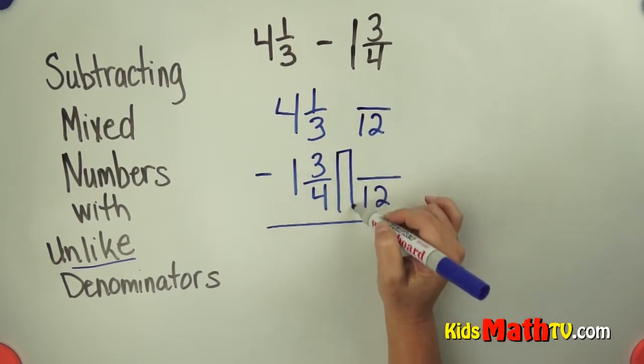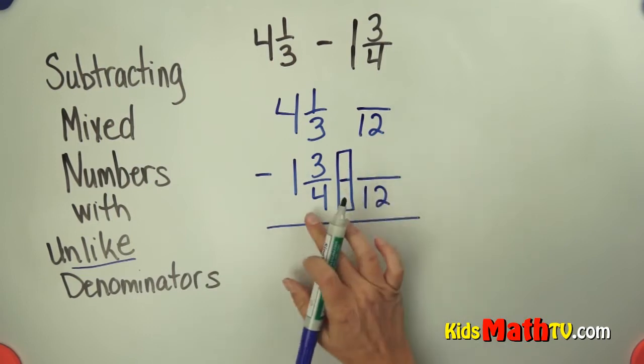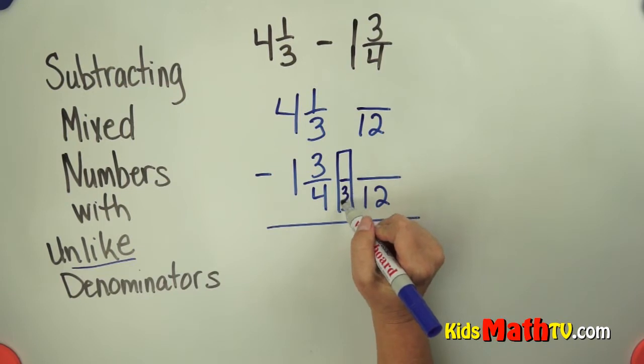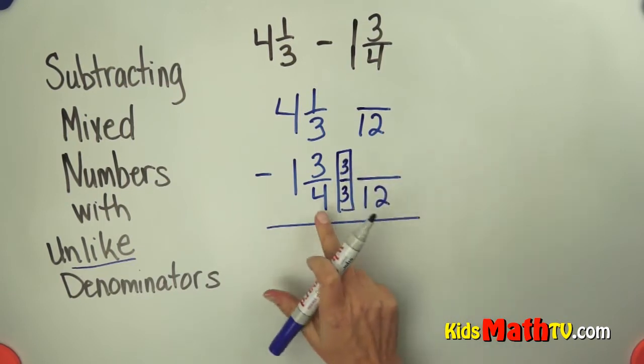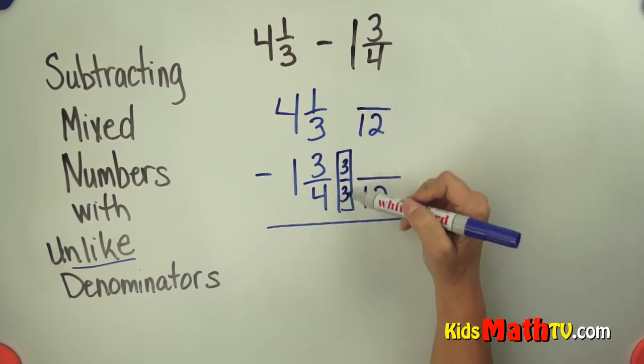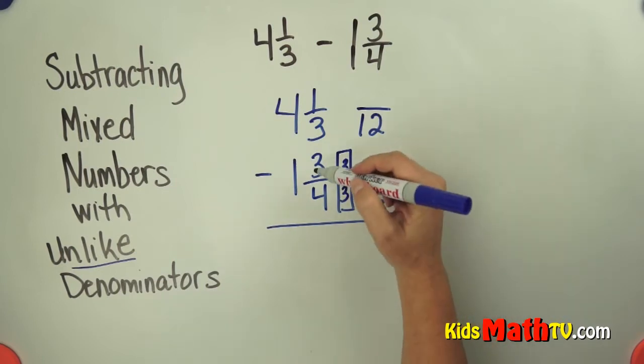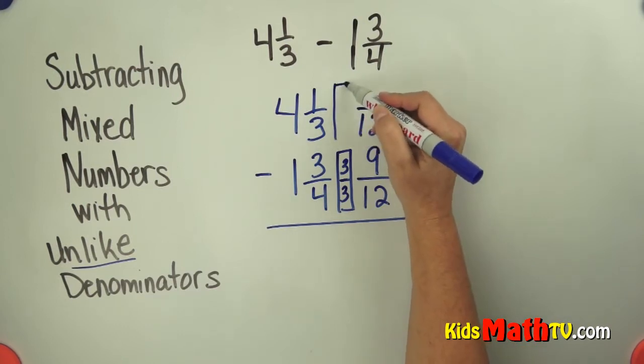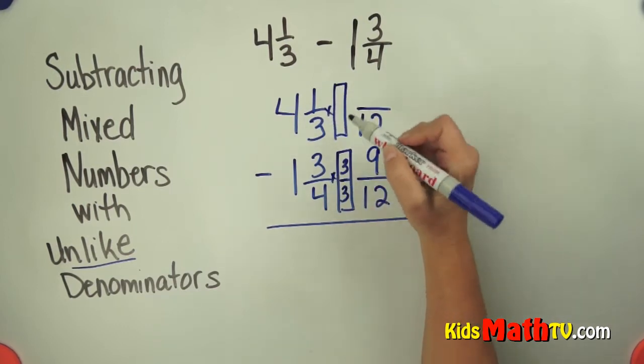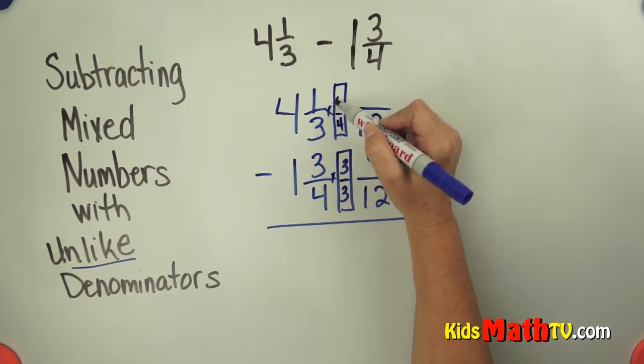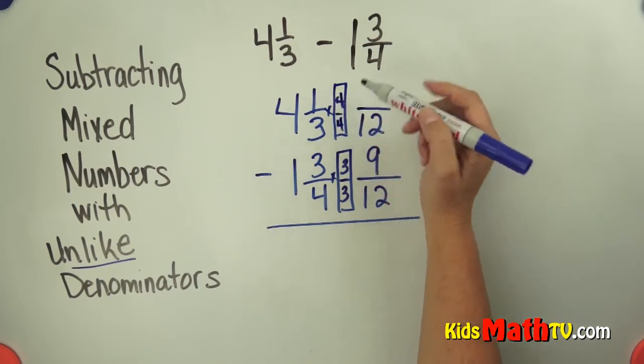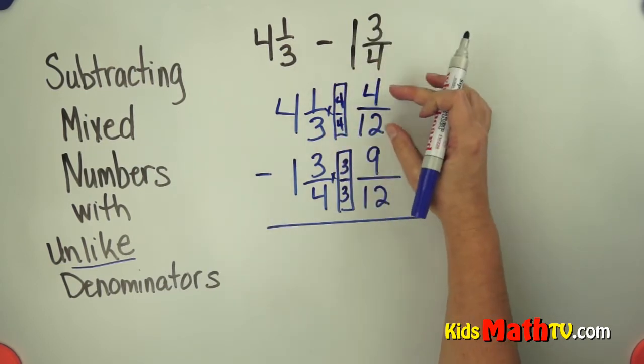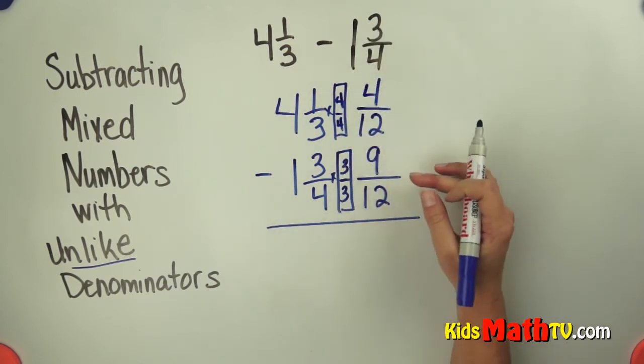Now I need to multiply this fraction by 1, and to make that 1 I'm going to make it 3 over 3 because 4 times 3 is 12 and 1 has to be the same numerator over the same denominator. 3 times 3 is 9. My 1 up here I'm going to multiply by is going to be 4 over 4. So 1 times 4 is 4 twelfths. So 4 twelfths is simply renaming 1 third and 9 twelfths renames 3 fourths.